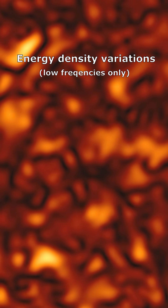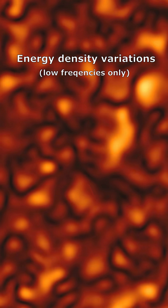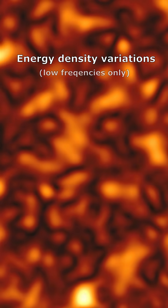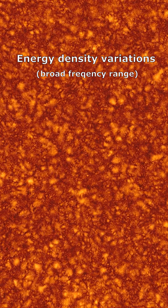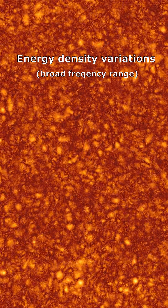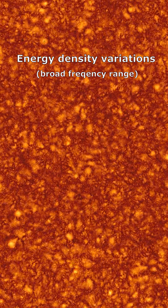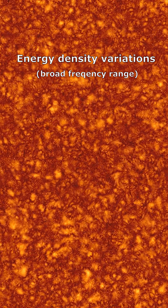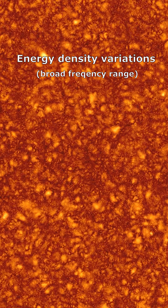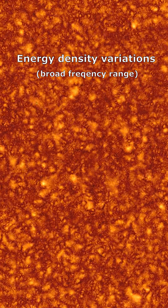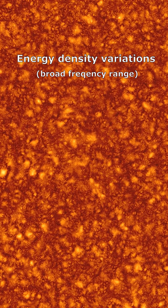If you only consider relatively low frequency variations, it would look something like this. But if you consider a very broad range of frequencies, it looks as shown here. What is clear is that the energy density of space is not uniform at all — it almost looks a bit like a dynamic foam.